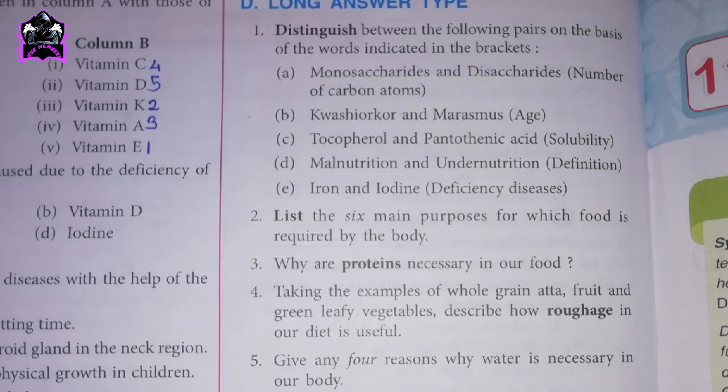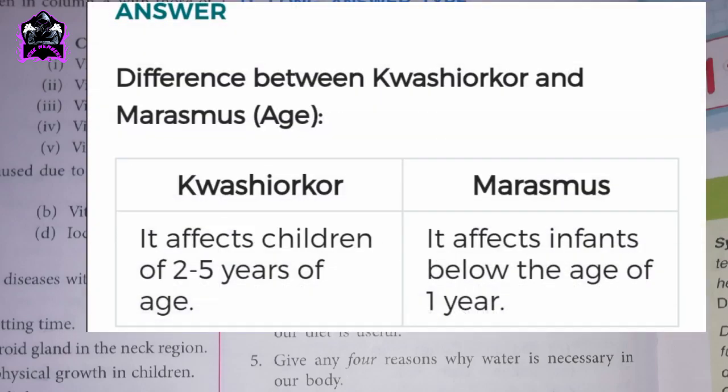1B. Distinguish between Kwashiorkor and Marasmus by age. Kwashiorkor affects children of 2 to 5 years of age. Marasmus affects infants below the age of 1 year.